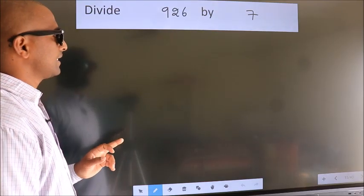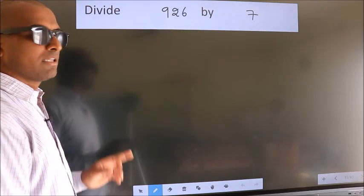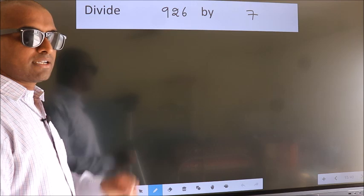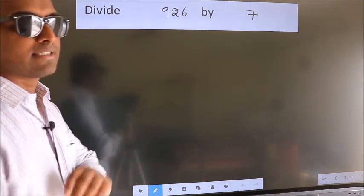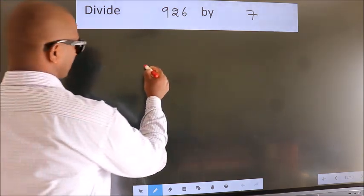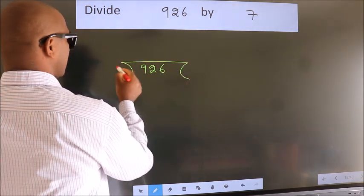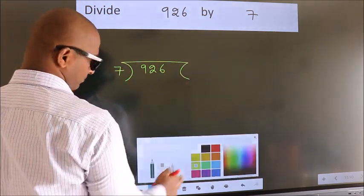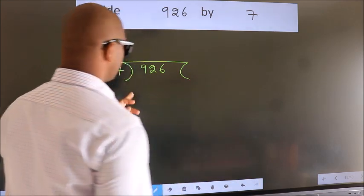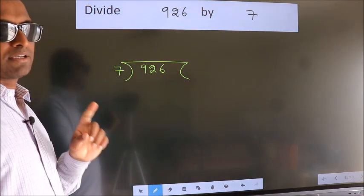Divide 926 by 7. To do this division, we should frame it in this way: 926 here, 7 here. This is your step 1.